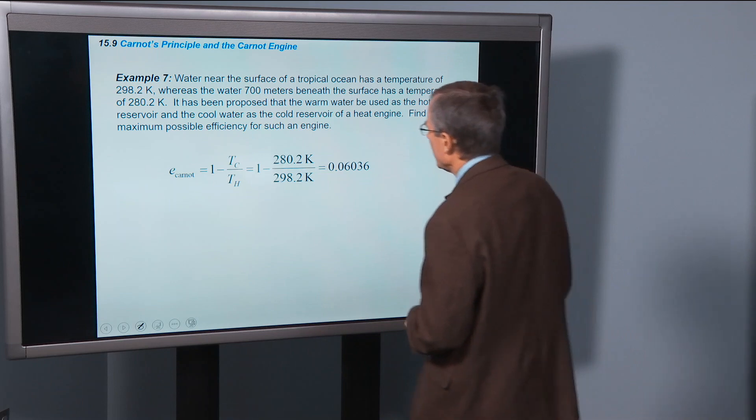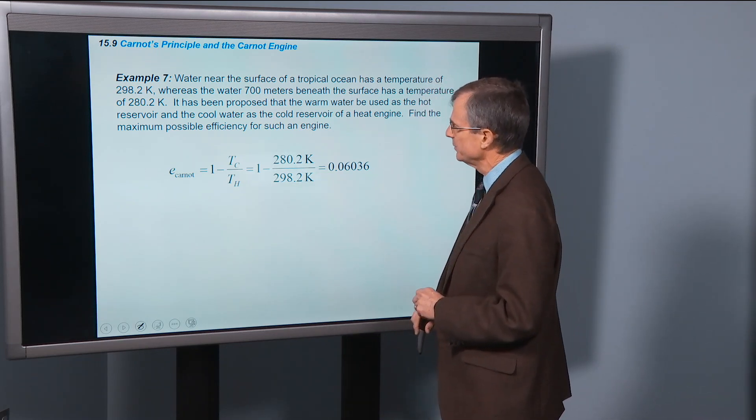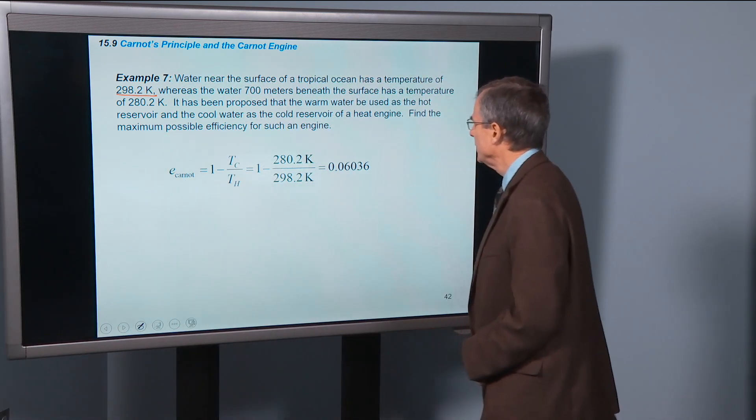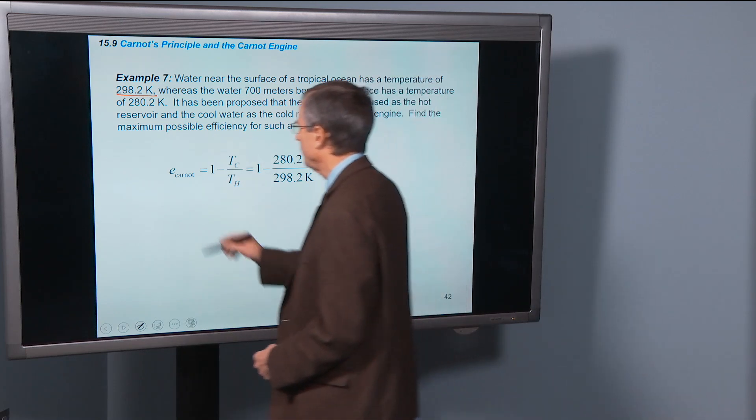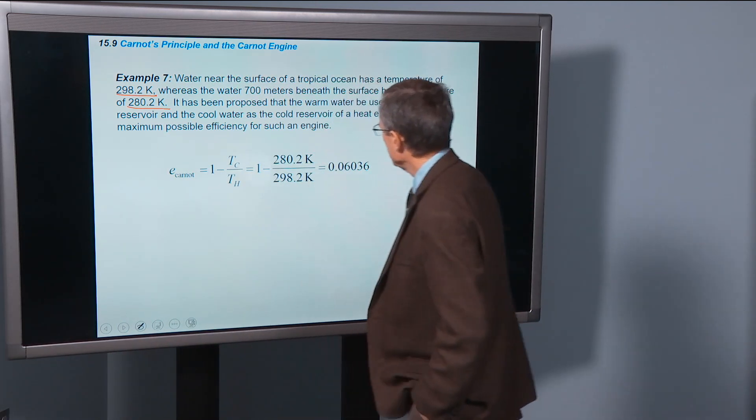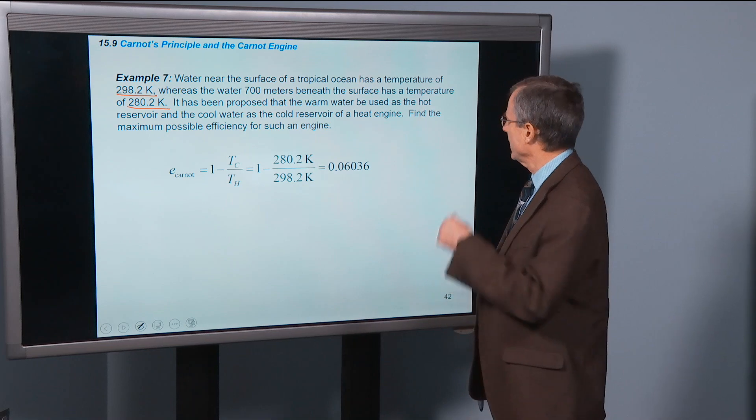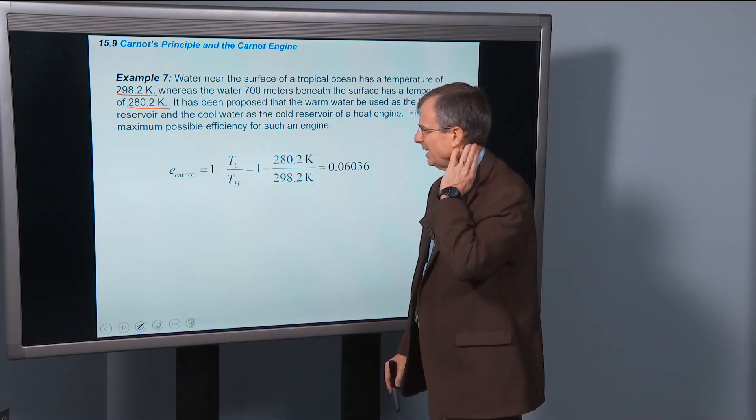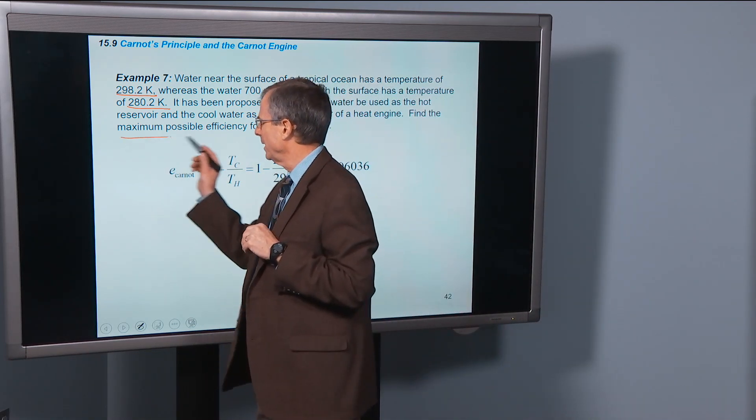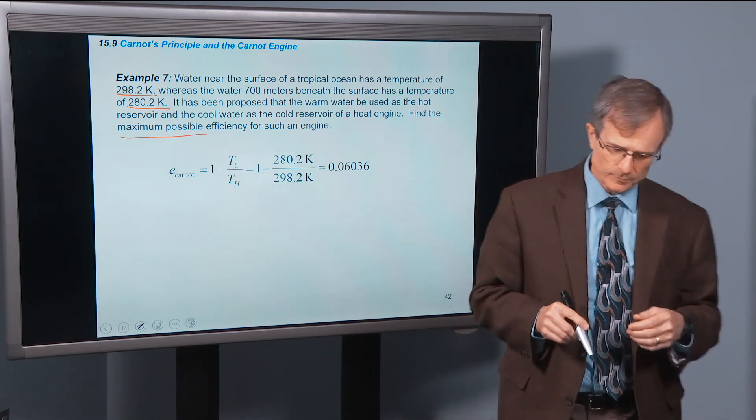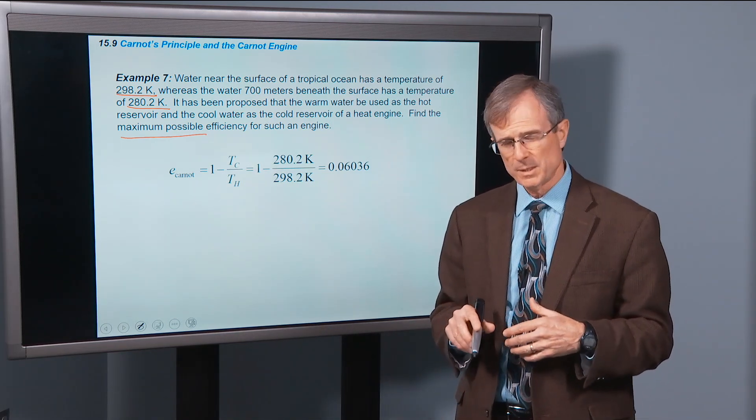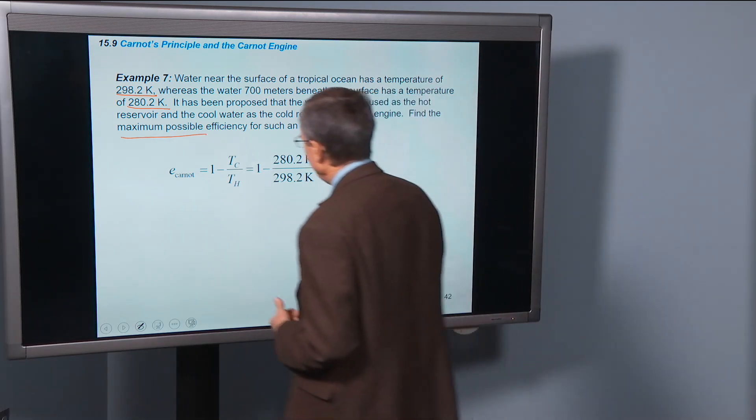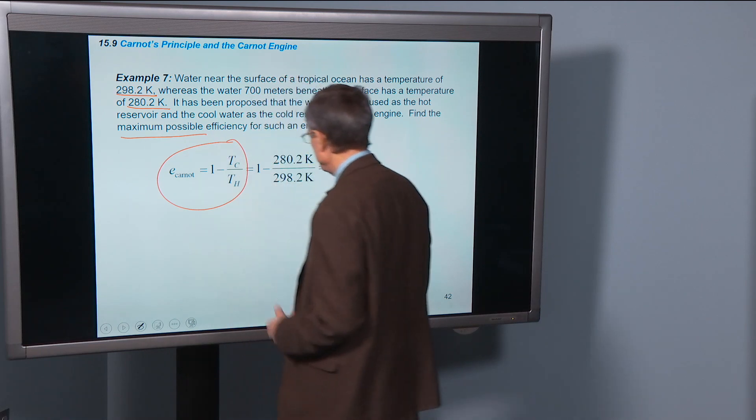So an example. Water near the surface of a tropical ocean has a temperature of 298.2 Kelvin, whereas the water 700 meters beneath the surface has a temperature of 280.2 Kelvin. It's been proposed that the warm water be used as the hot reservoir, and the cool water as the cold reservoir of a heat engine. Find the maximum possible efficiency. Now remember, for any process, the most efficient process is going to be the reversible process, and that's the Carnot engine. And that's the 1 minus TC over TH, what we just talked about.